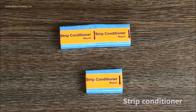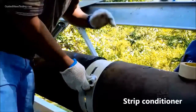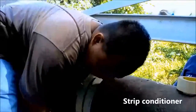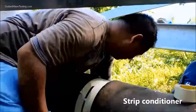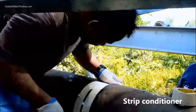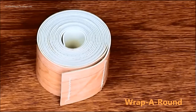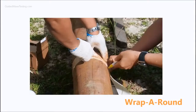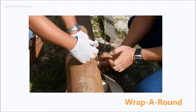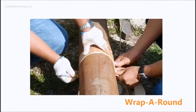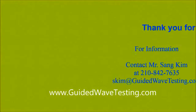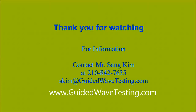Strip conditioners are used to magnetize the iron cobalt strip to generate torsional mode in a pipe. Rev-round is used to align the iron cobalt strip along the pipe circumference and perpendicular to the pipe axis. Thank you for watching.